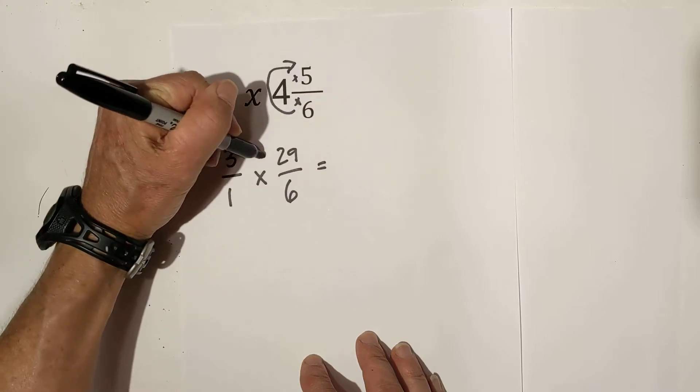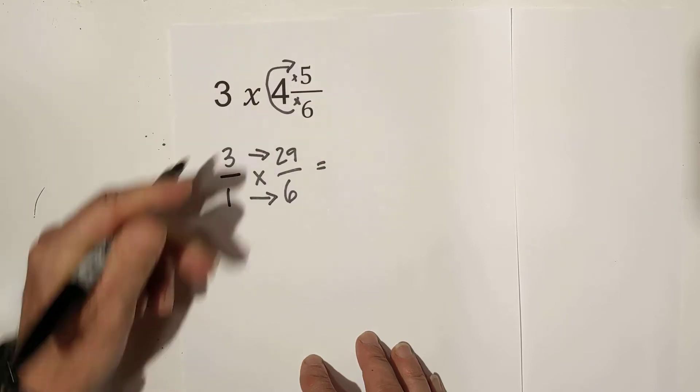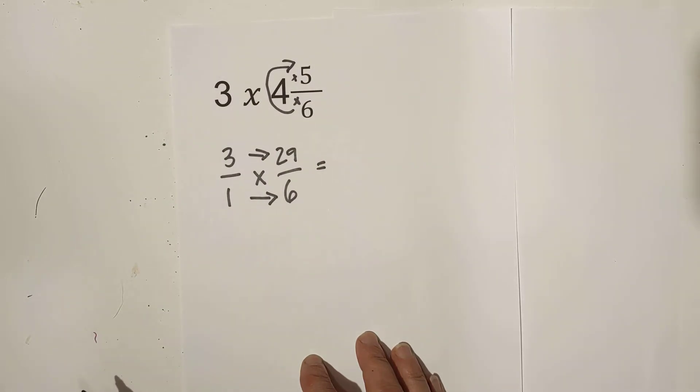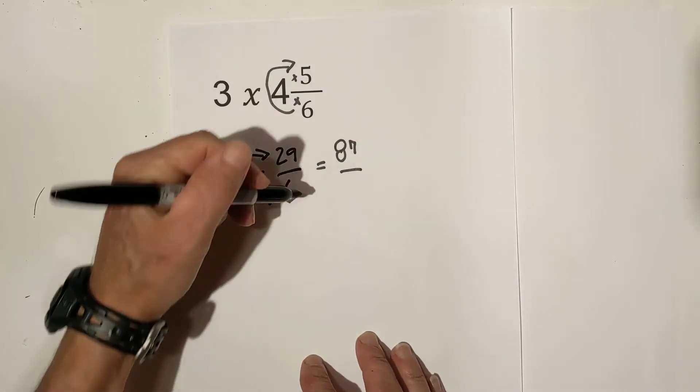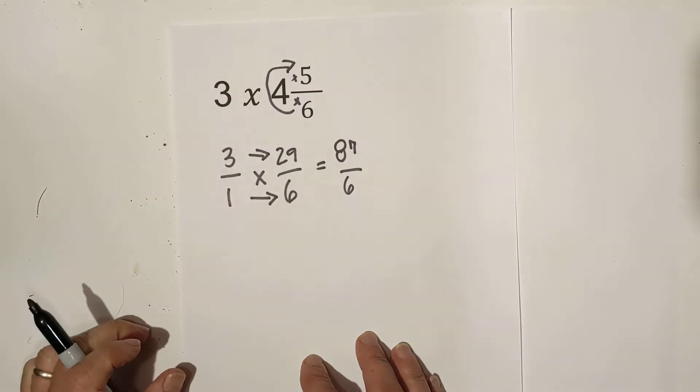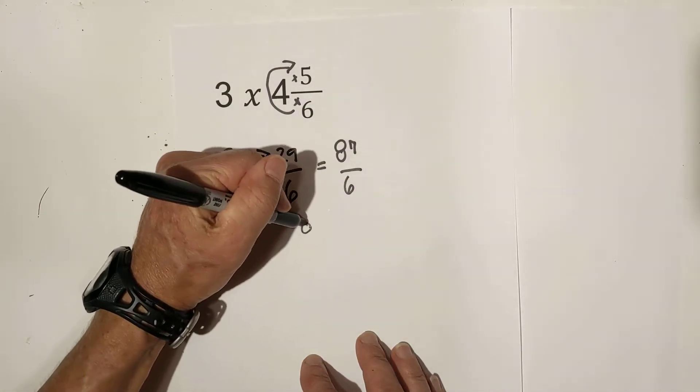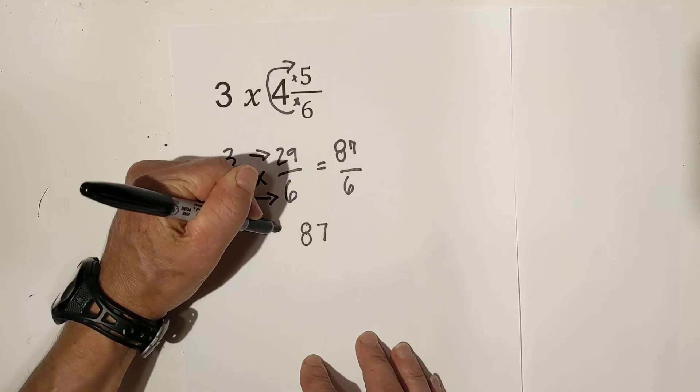Then all we do is multiply straight across. 3 times 29 is 87. And 6 times 1 is 6. Now let's convert it back to a mixed number.